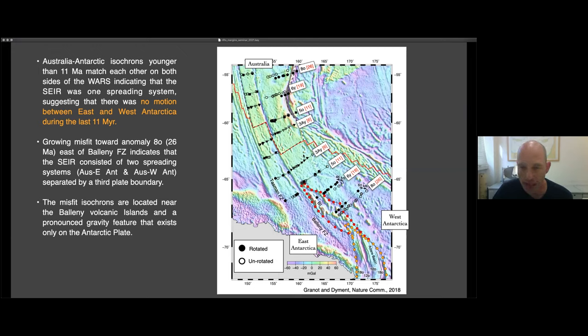And as you can see, these young, two young isochrons, the 3AY young and 5 old isochrons, 6 and 11 million years old isochrons fit perfectly each other on both sides of the fracture zone, suggesting that the rift was not active during the last 11 million years.